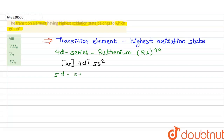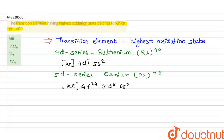There is another element from the 5d series — the third transition series element — that is osmium (Os), having atomic number 76. The electronic configuration for osmium is [Xe] 4f14 5d6 6s2.